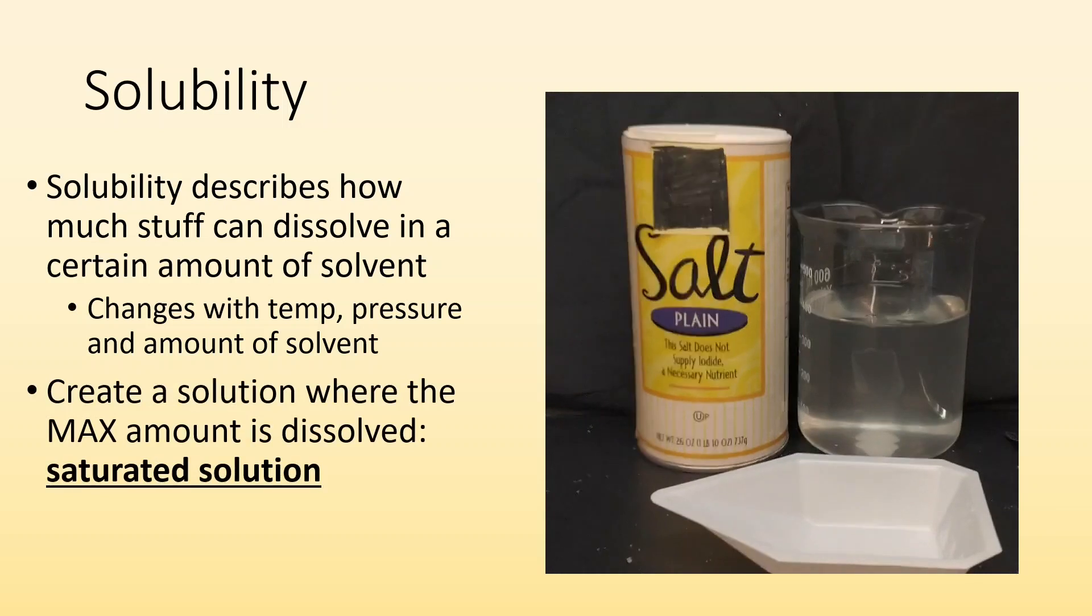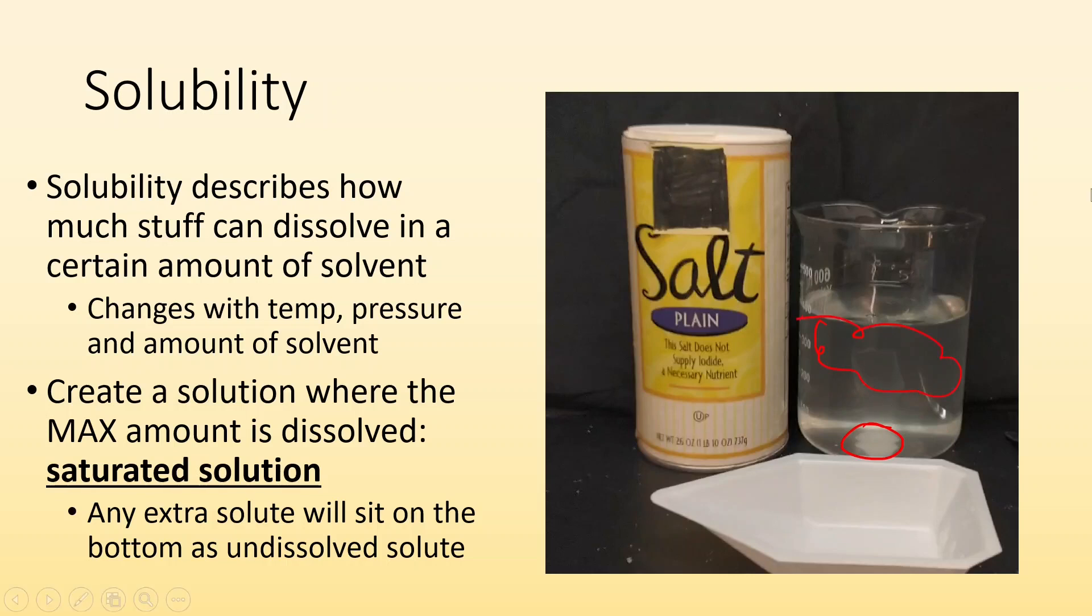If we created a solution where the maximum amount that can dissolve has been dissolved, we call that a saturated solution. It's dissolved as much as it can. And one of the characteristic features is that there's extra solute at the bottom that is undissolved. So that tells us that the solution above it has dissolved everything it can. It's a saturated solution.